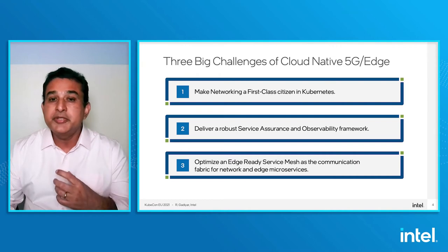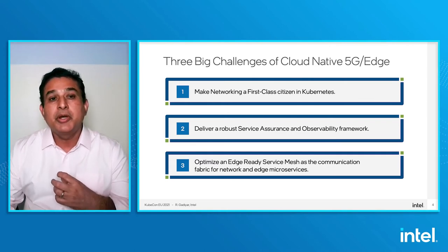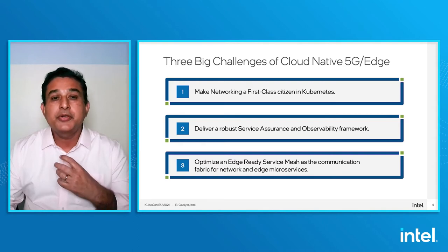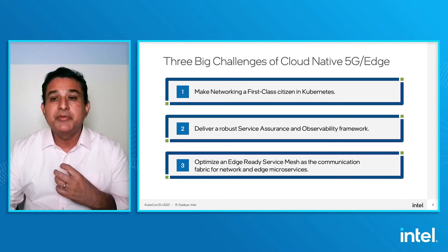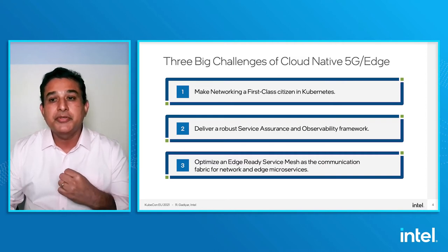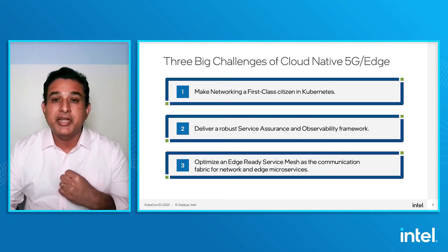First, as you know, Kubernetes has become the de facto cloud operating system — the tool of choice for orchestration and automation. However, one thing I would like us to think about is how we make networking a first-class citizen within Kubernetes. Second, as the complexity of infrastructure grows and we deploy services that span multiple edge and cloud locations, how do we build a robust service assurance and observability solution? And third, service mesh is a popular technology that delivers a common set of scalable functions such as data plane, east-west security, load balancing, service proxies, etc. So how can we enhance the service mesh for 5G and edge requirements?